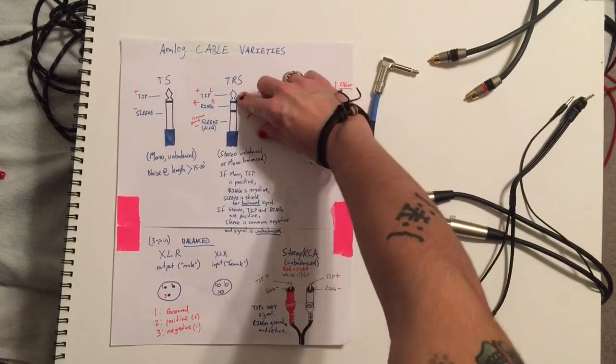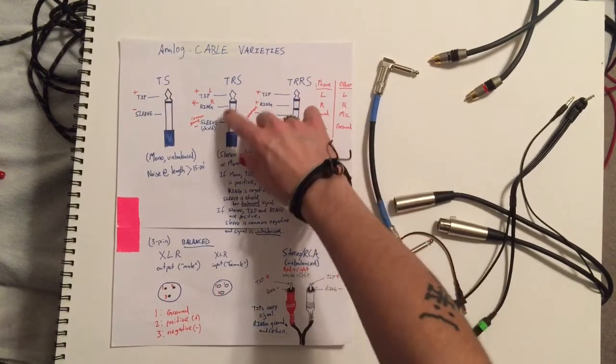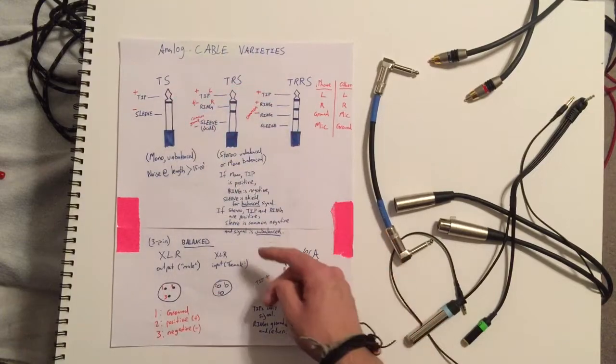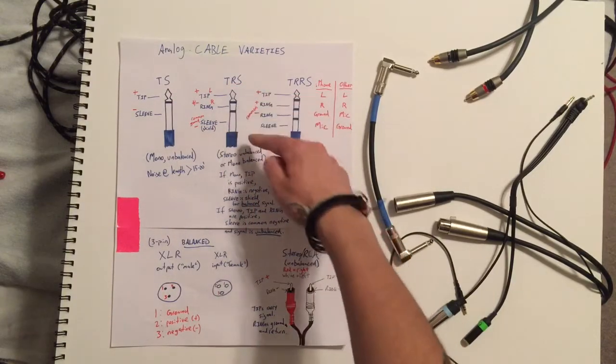So then we end up with basically just a big positive and a negative. That functions similarly to the TS cable and our signal is stereo but it's unbalanced.